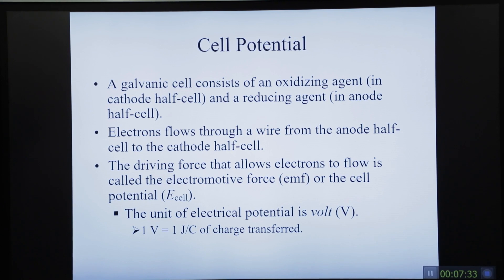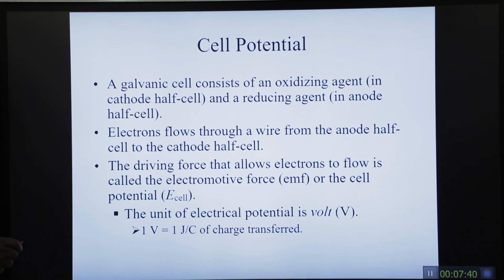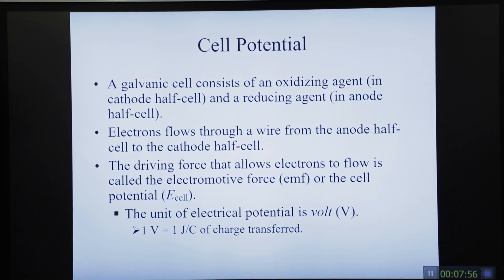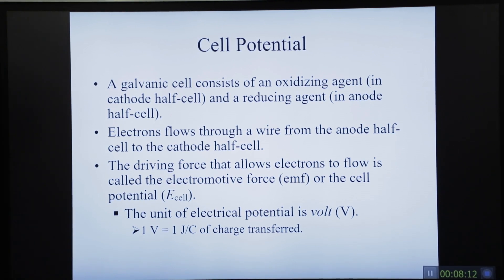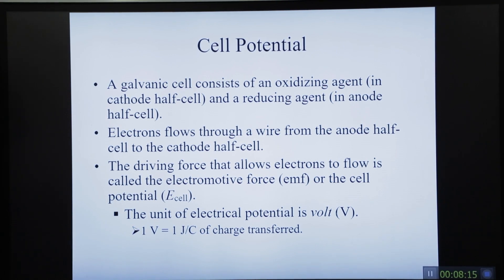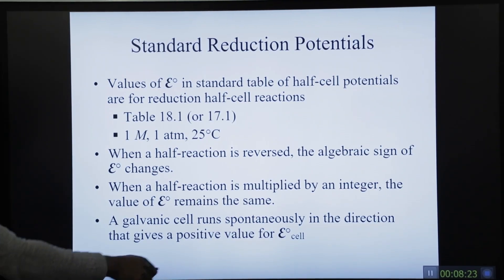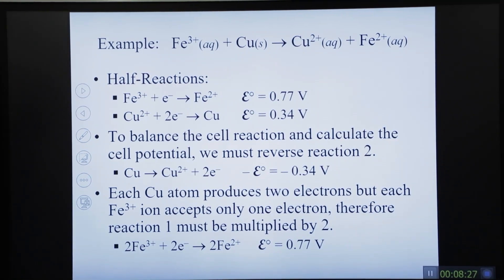A galvanic cell consists of an oxidizing agent in the cathode half-cell and a reducing agent in the anode half-cell. Electrons flow through a wire from the anode half-cell to the cathode half-cell. The driving force that allows electrons to flow is what we call the electromotive force, or cell potential. The unit of electrical potential is a volt, where one volt equals one joule per coulomb.